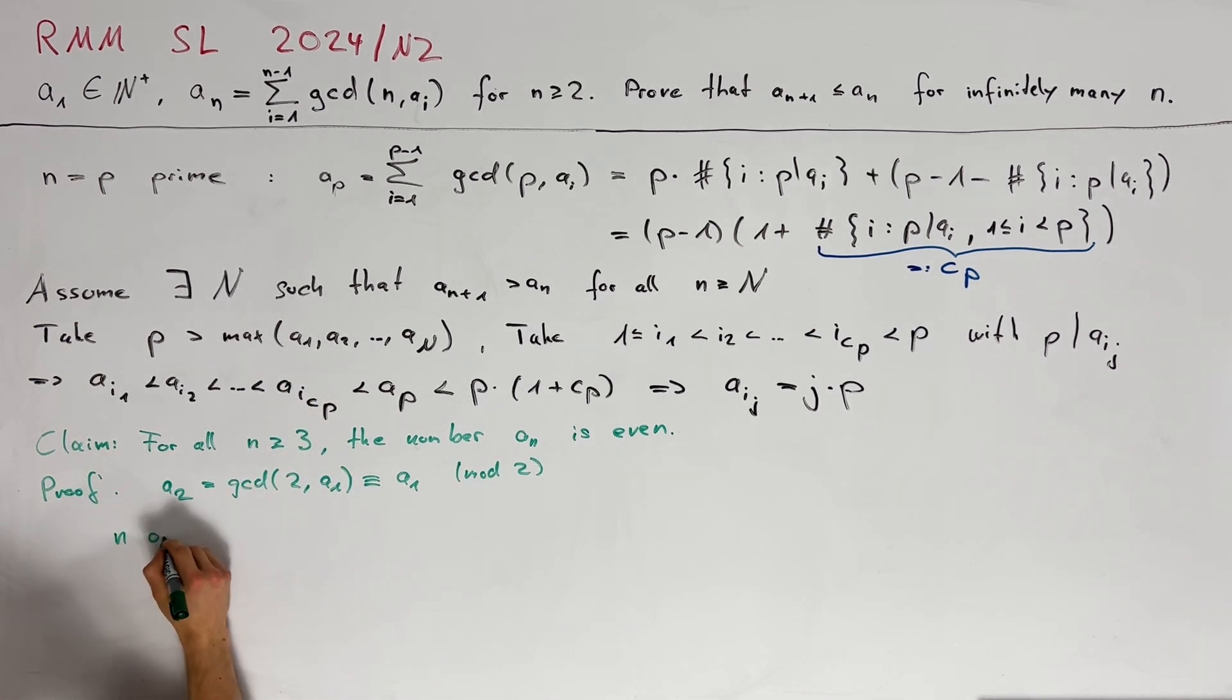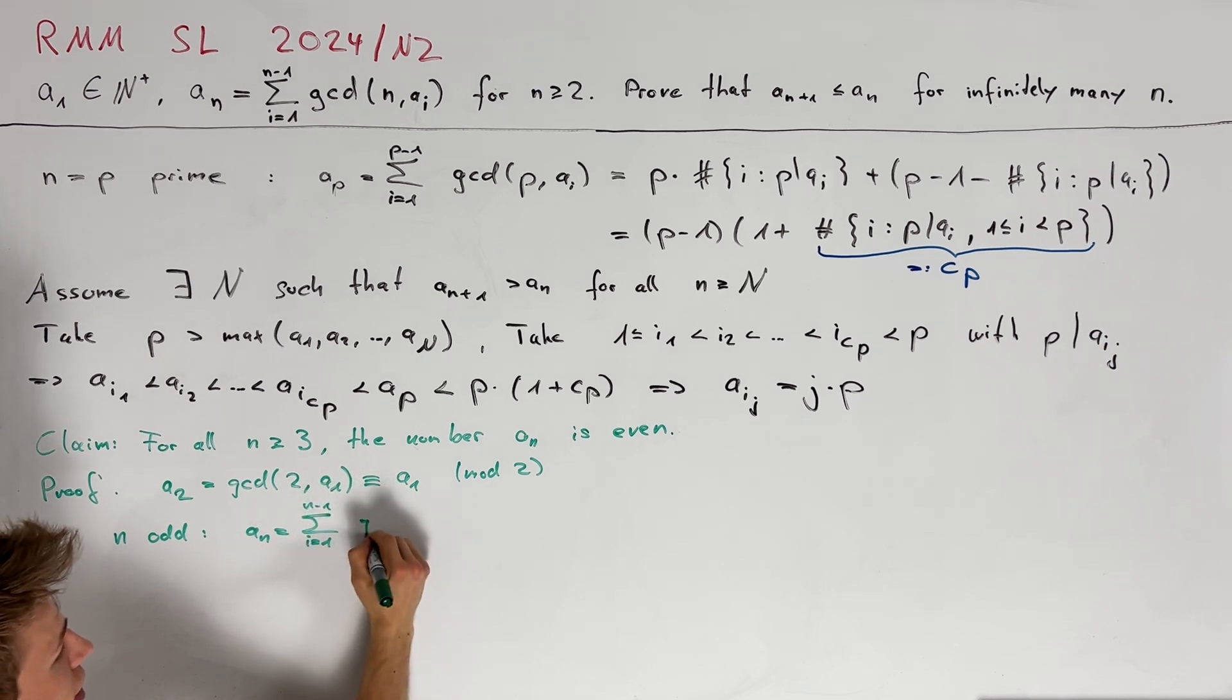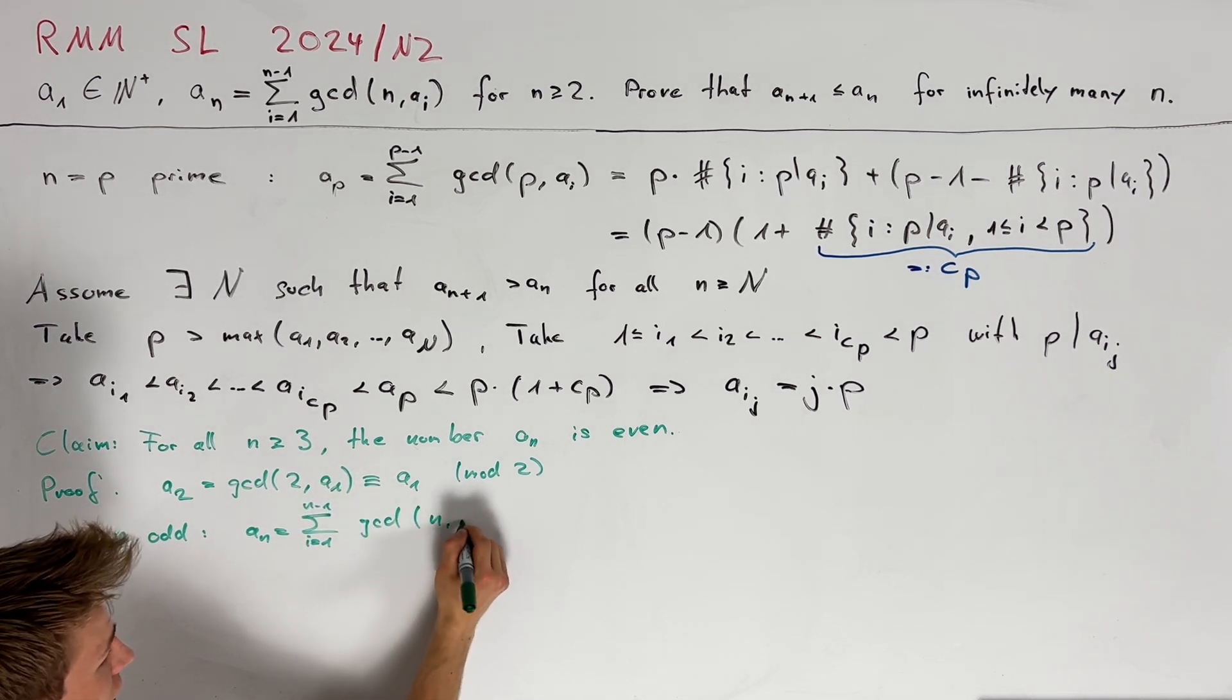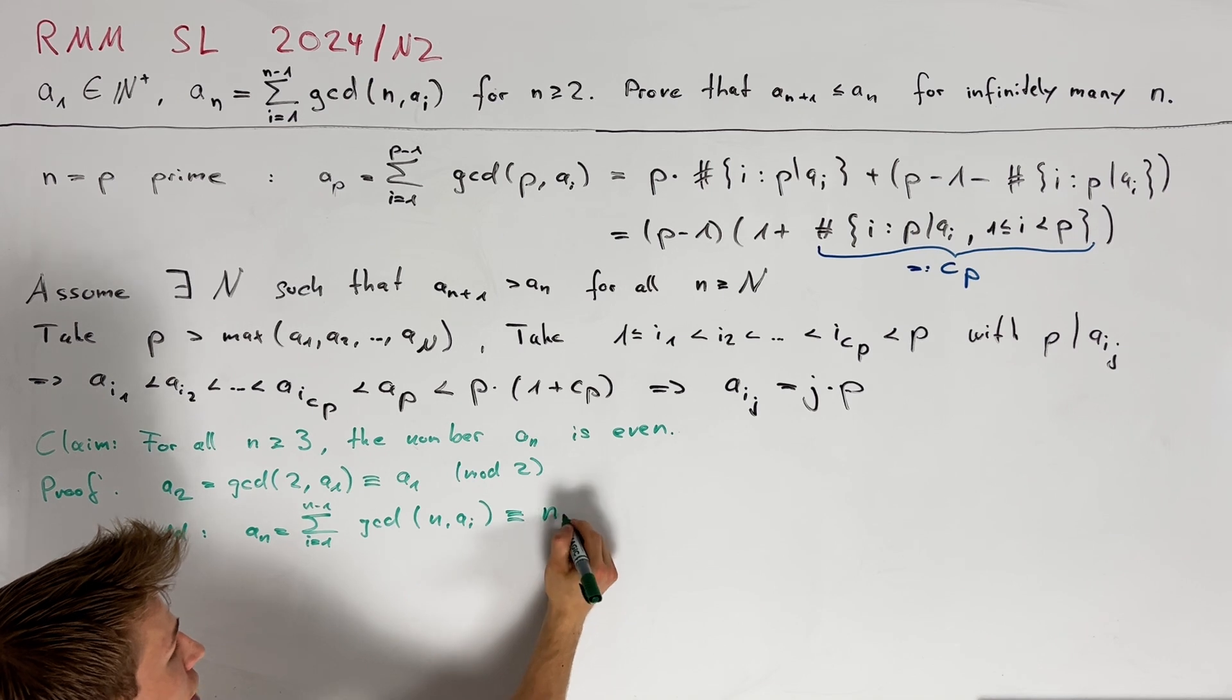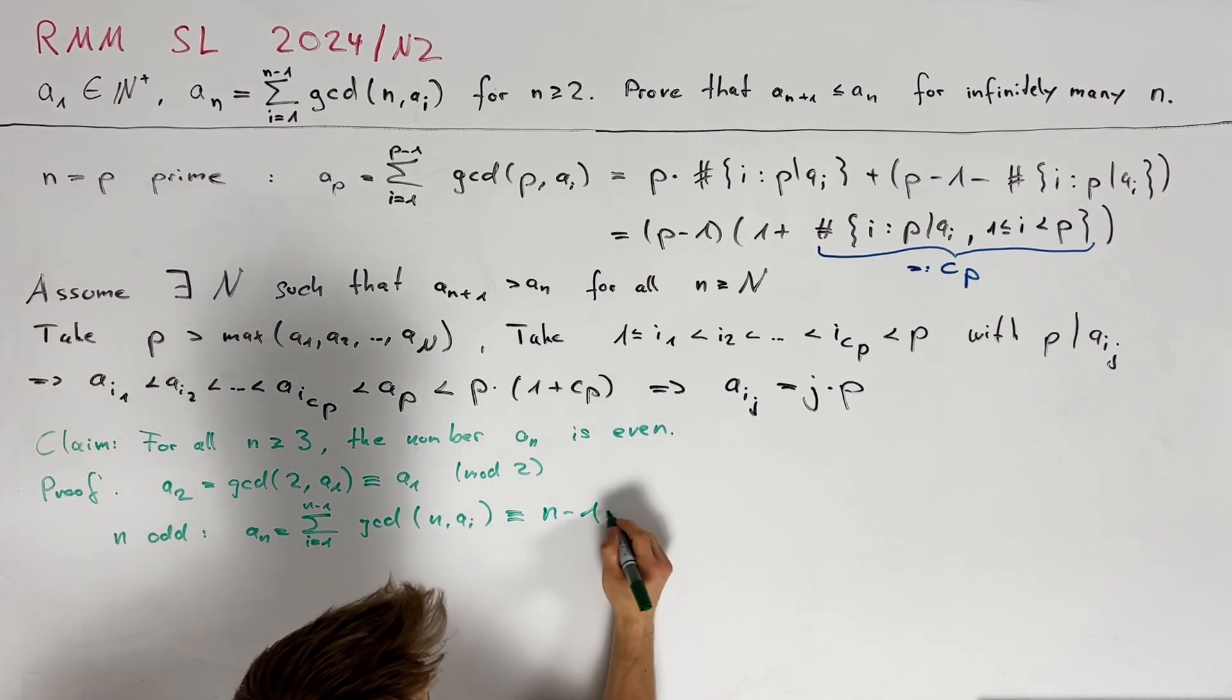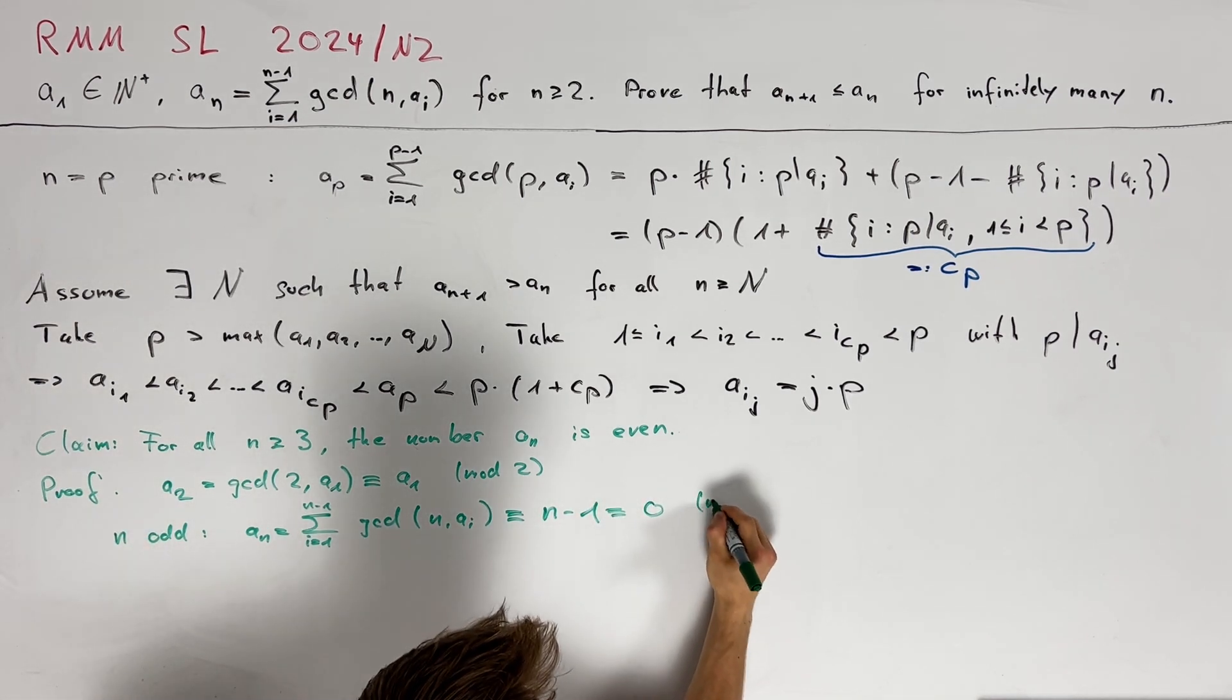Namely, if n is odd we get that a_n equals the sum from i equals to 1 up to n minus 1 of gcd(n, a_i) and now since n is odd this gcd is just congruent to 1 modulo 2 and therefore this is congruent to n minus 1 which is congruent to 0 modulo 2.